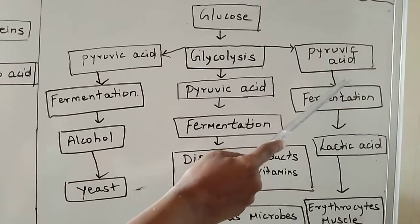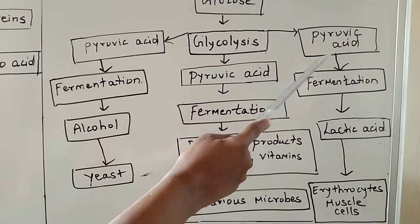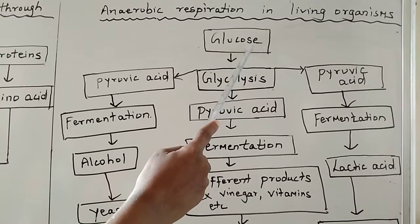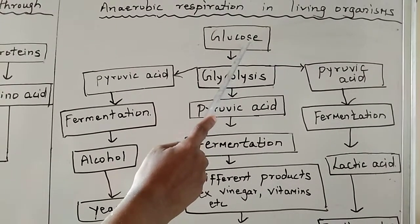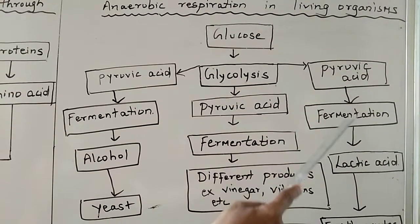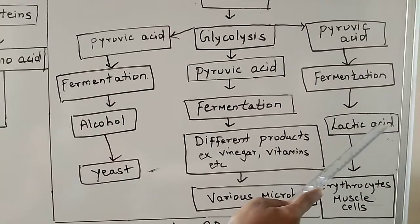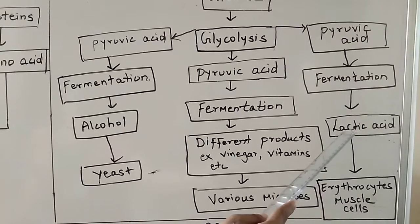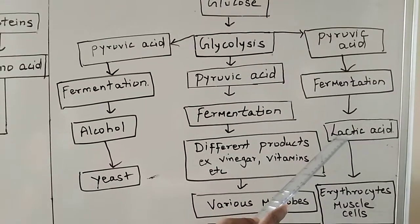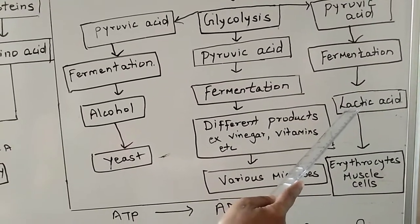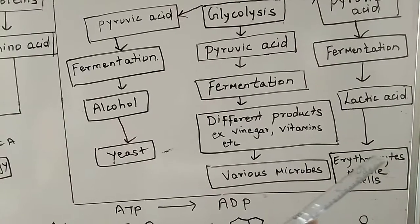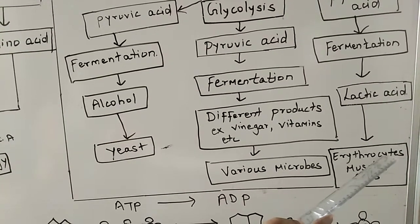Another example: this type of respiration is carried out in human beings. When you are working very hard or carrying out rigorous exercise, you feel tired. Glucose gets converted to pyruvic acid, it undergoes fermentation and lactic acid is produced. With the help of lactic acid, we feel tired. This lactic acid is produced in our muscles or it can also be produced in our RBCs — red blood corpuscles, also known as erythrocytes.